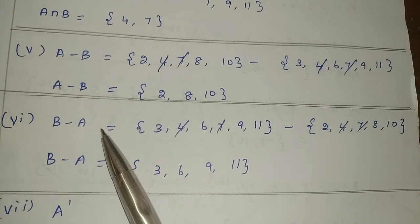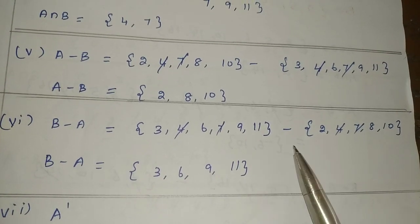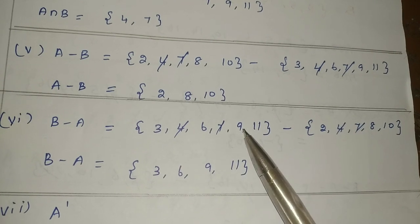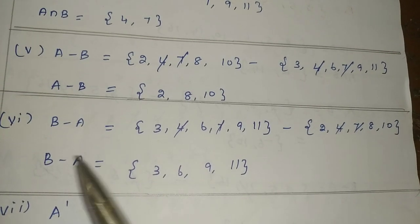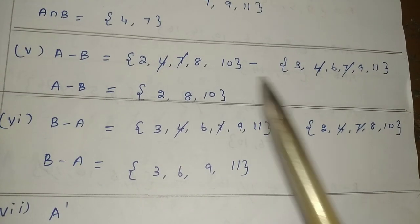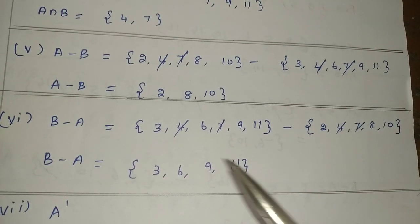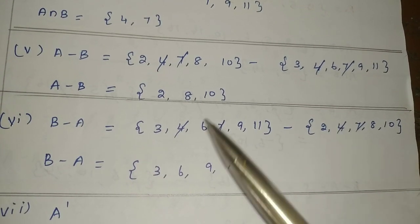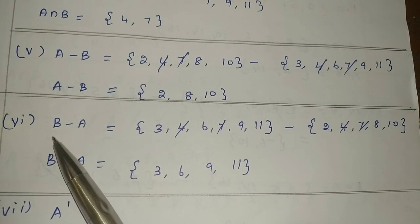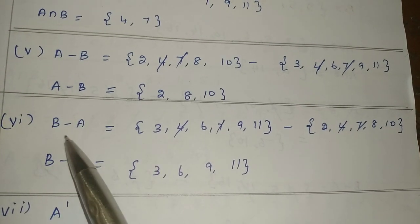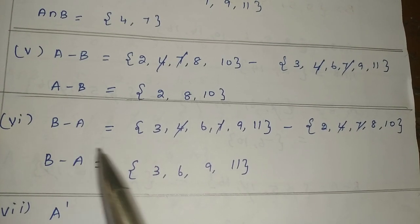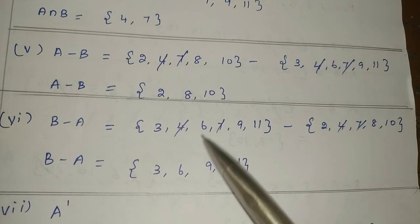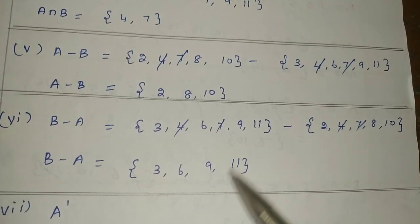Next is B difference A. B values are: 3, 4, 6, 7, 9, 11. A values are: 2, 4, 7, 8, 10. We cancel the common elements — 4 and 4, 7 and 7. The balance values remaining in B are: 3, 6, 9, 11. So B difference A is {3, 6, 9, 11}.